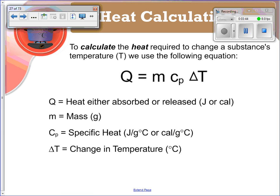To calculate the heat required to change a substance's temperature T, we're going to use the following equation: Q equals mCp∆T, and also sometimes it's written with a lowercase q, mc delta T.